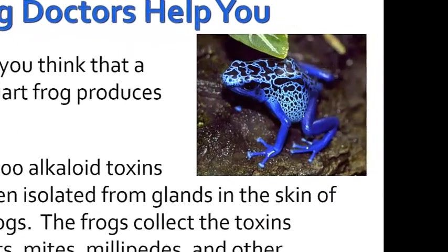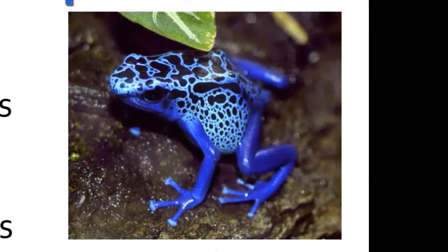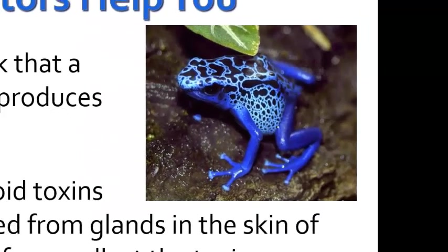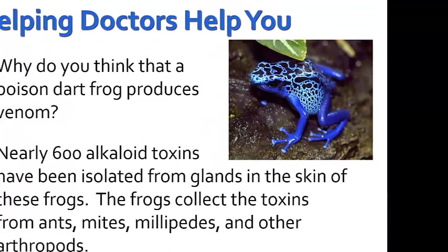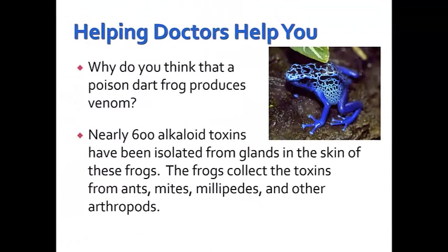The poison dart frog also produces venom — not to stun prey, but in defense against predators. Nearly 600 alkaloid toxins have been isolated from glands in the skin of these frogs. The frogs collect the toxins throughout their life from ants, mites, millipedes, and other arthropods.